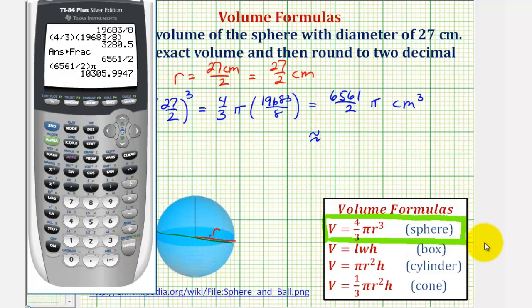Now, if we round this to two decimal places, notice how the third decimal place is a four, so we round down, so this will be approximately 10,305.99 cubic centimeters.